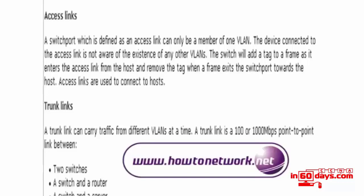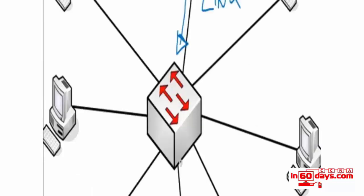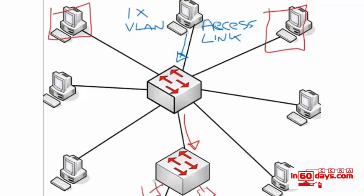The switch adds a tag to the frame as it enters the access link from the host, and removes the tag when the frame exits the switch port back towards the host. The switch needs to know which VLAN the host is a member of. When traffic has to traverse between two switches, we need a different type of link — a trunk link. The switch tags the traffic so it can traverse between two different switches.